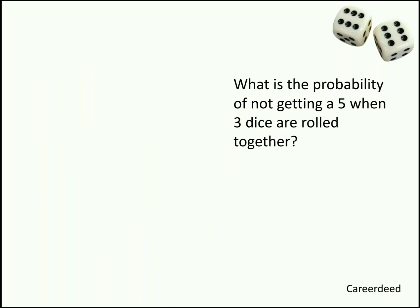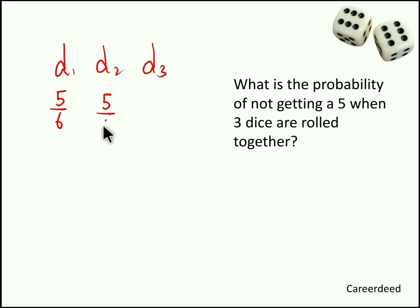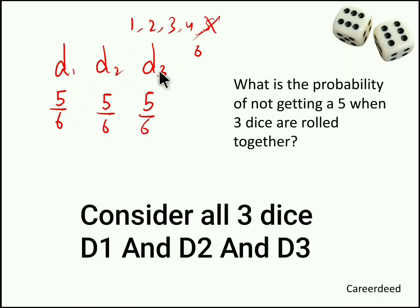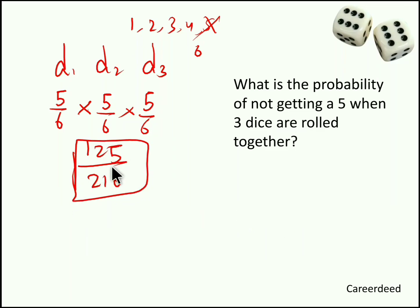What is the probability of not getting a 5 when 3 dice are rolled together? For each die, 5 appears on only 1 face, so not getting a 5 on a single die has probability 5/6. For all 3 dice: 5/6 × 5/6 × 5/6 = 125/216. So 125/216 is the probability of not getting a 5 while rolling 3 dice together.